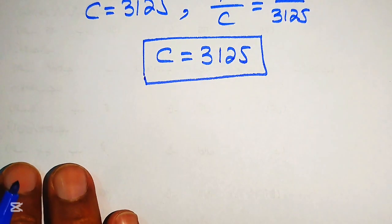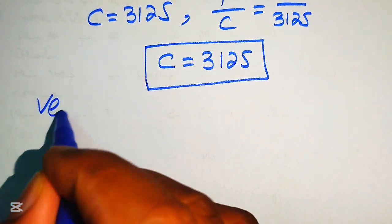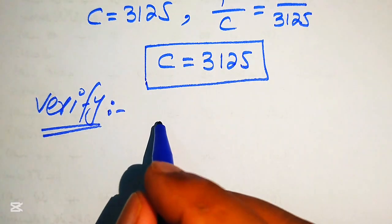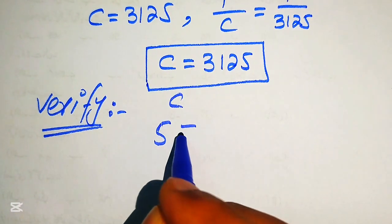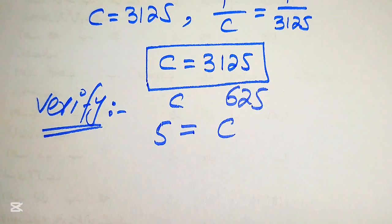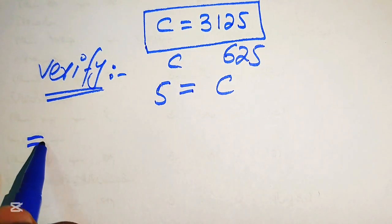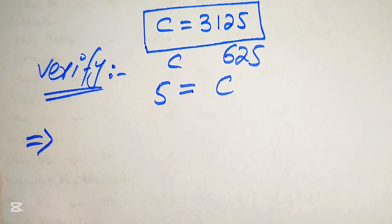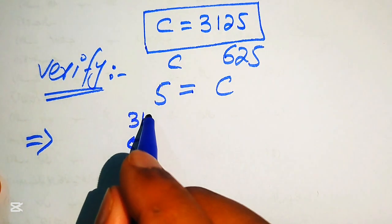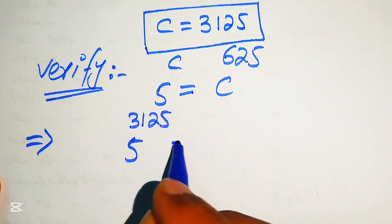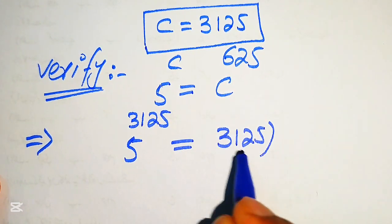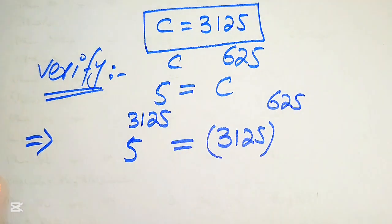Now we verify this value of c by substituting back into the original equation: 5 to the power of c equals c to the power of 625. Substituting c equals 3125, we get 5 to the power of 3125 on the left, and 3125 to the power of 625 on the right.